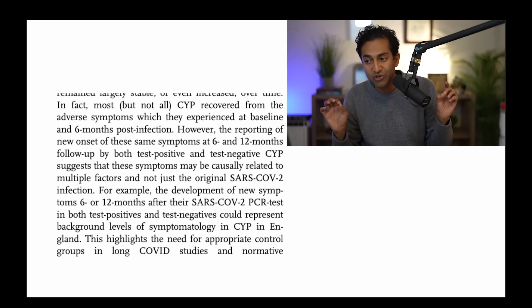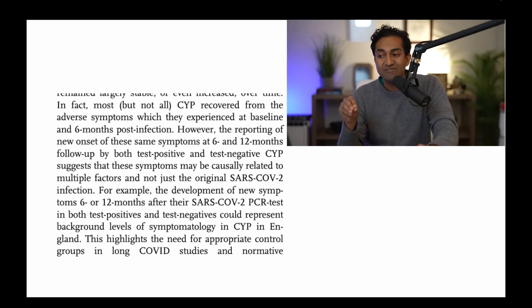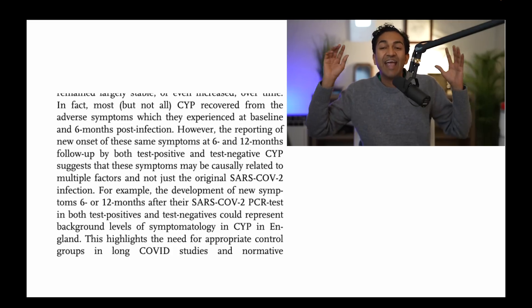So here's what the authors conclude. Most children and young people recovered from adverse symptoms, which they experienced at baseline and six months post-infection. However, the reporting of new onset of these same symptoms at six and 12 months follow up by both test positive and test negatives may be causally related to multiple factors and not just SARS-CoV-2. This highlights the need for appropriate control groups and it blows up cross-sectional studies.